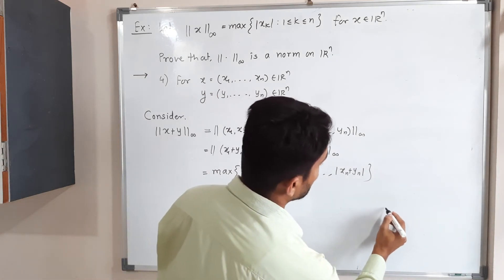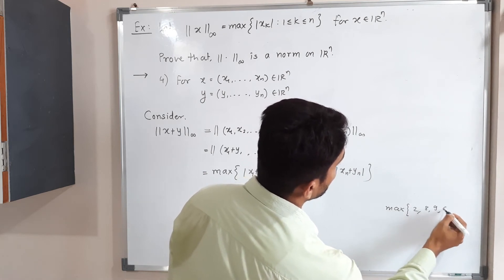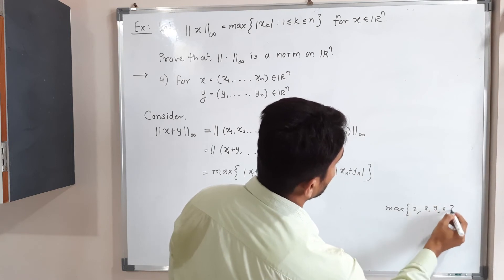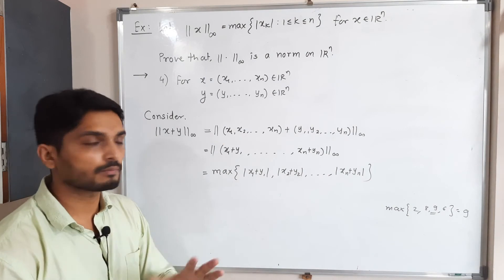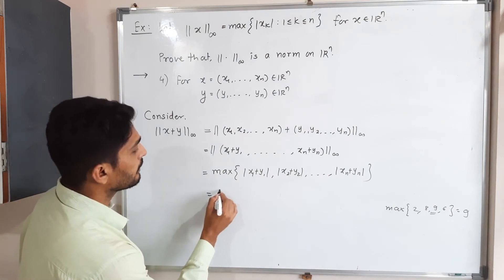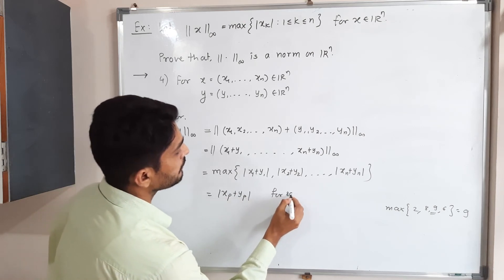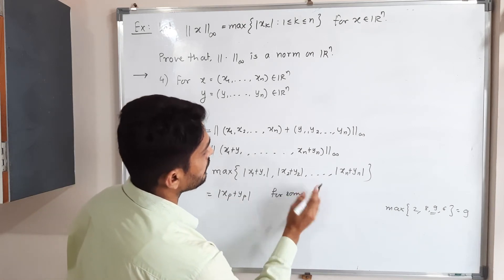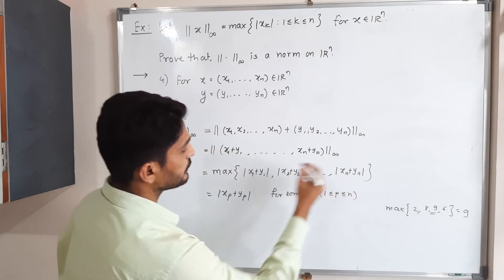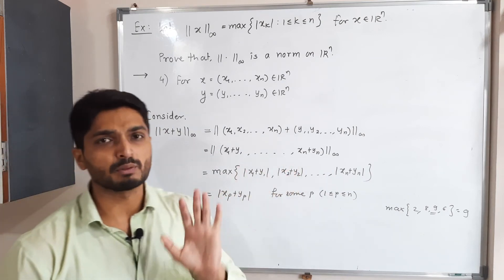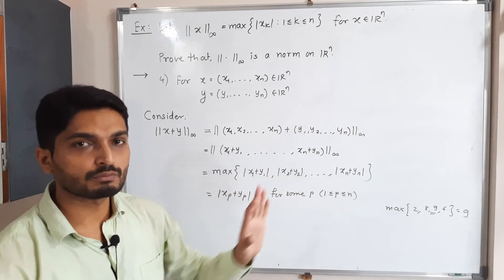Out of all these terms, at least one will be the maximum. Suppose the maximum is |xₚ + yₚ| for some p where 1 ≤ p ≤ n. We don't know in advance which term is maximum — it could be any one of them.